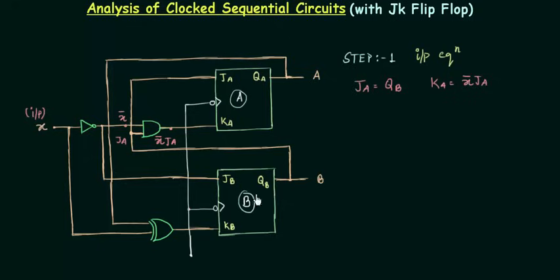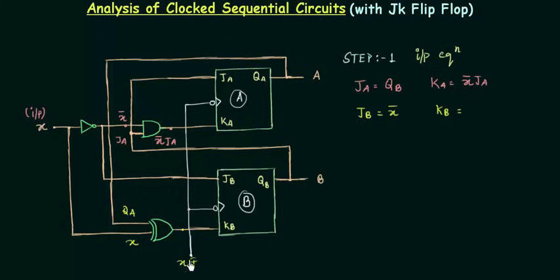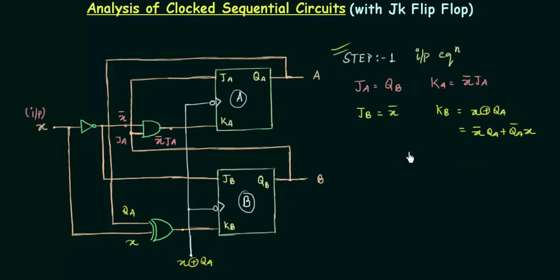Now we will move to the B flip-flop. First I will find out JB — it equals X complement. And KB is the output of this XOR gate. The first input is QA and the second input is X, so the output is X XOR QA. So KB equals X XOR QA. This is my odd-ones detector; I can also write it as X'QA or QA'X. So we are done with step 1, in which we have found out the different expressions for our different inputs.